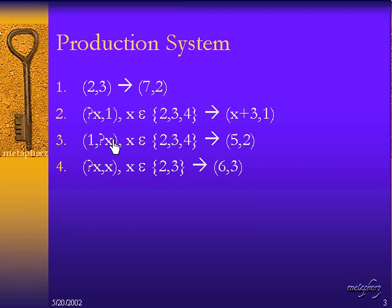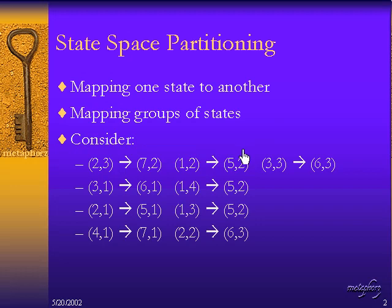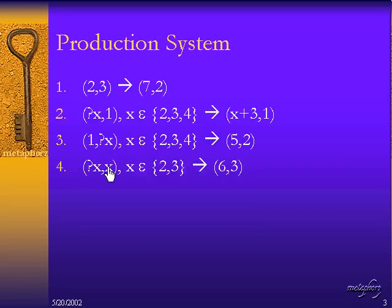If we look at the other two remaining rules in this production system, we find that we have a similar situation. Here we have to match 1 comma and then something over here, where that something can be 2, 3, or 4, and that maps to 5 comma 2. So 1 comma 2, 1 comma 3, and 1 comma 4, we can see that matches these individual rules right here.